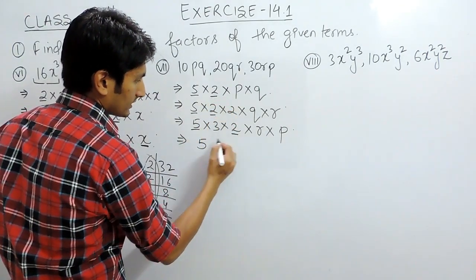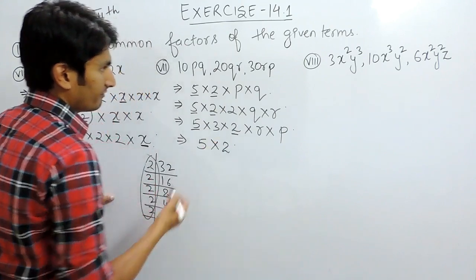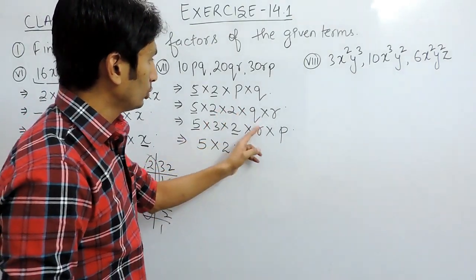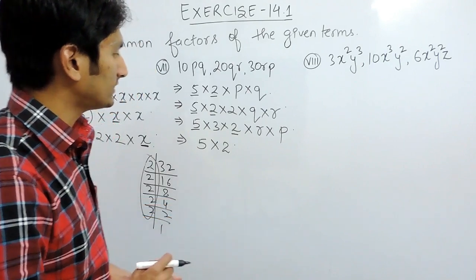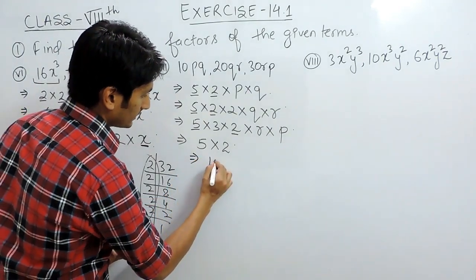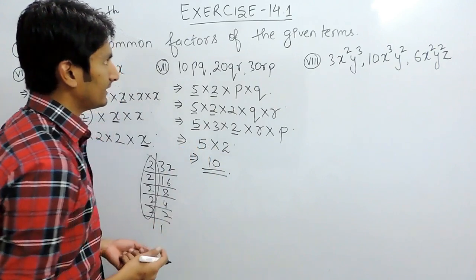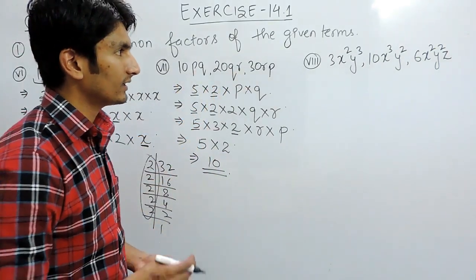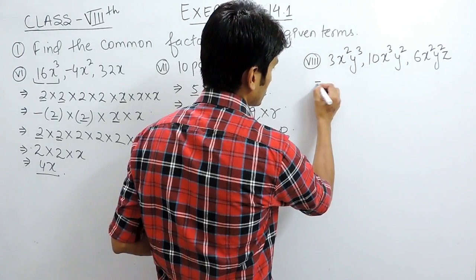2 is also a common factor, but no variable is common in all three terms. So multiplying 5 and 2, we get 10 as the common factor for these three terms.